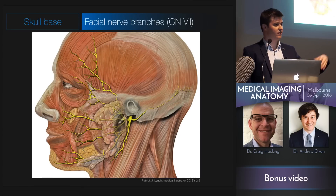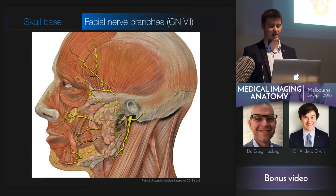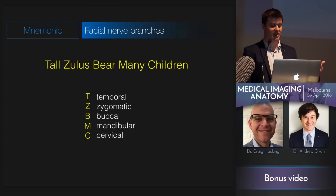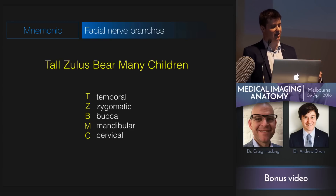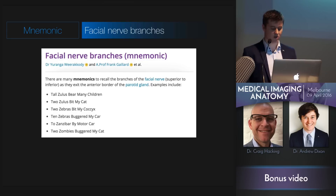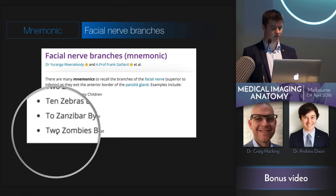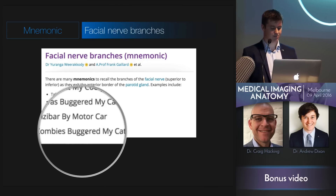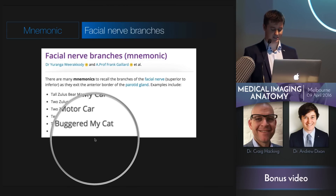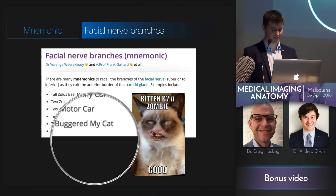Once the facial nerve gets out into the parotid gland, it then has multiple branches. From medical school, 'tall Zulus bear many children' — for the temporal, zygomatic, buccal, mandibular, and cervical branches. On the website there are lots more options. I like this one: 'two zombies buggered my cat.' I think I'm going to remember that one from now on.